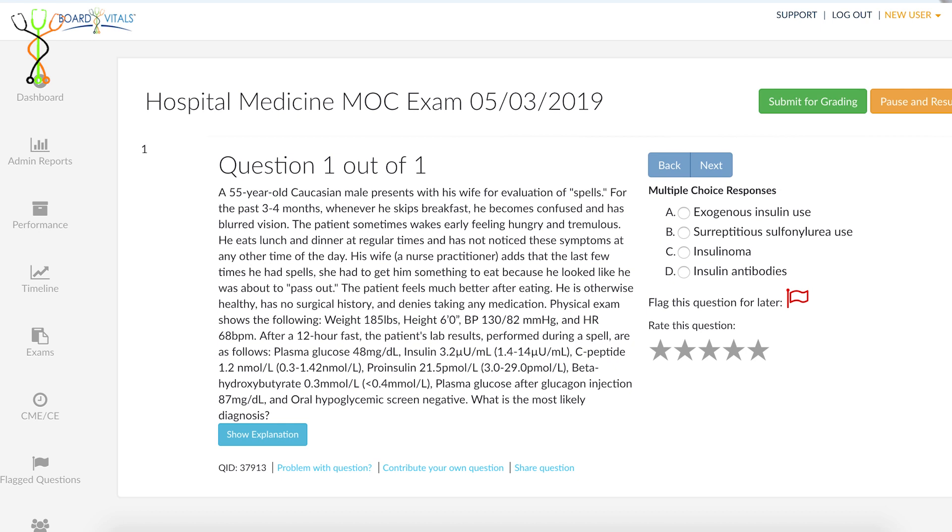A 55-year-old Caucasian male presents with his wife for evaluation of spells. For the past three to four months, whenever he skips breakfast, he becomes confused and has blurry vision. The patient sometimes wakes up early feeling hungry and tremulous. He eats lunch and dinner at regular times and has not noticed these symptoms at any other time of the day.